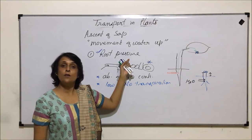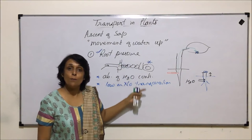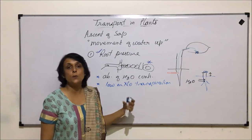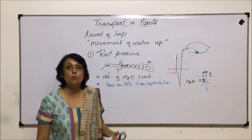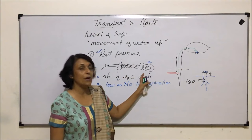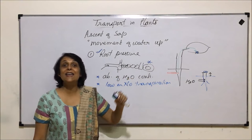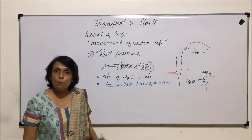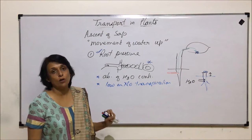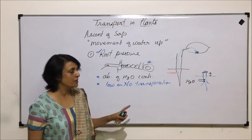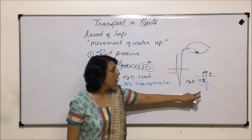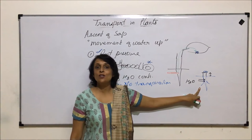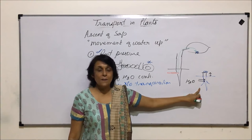When we are talking of tall plants which are 20 feet, 25 feet or even more tall, root pressure is not enough to pump water upwards. But it does help in small herbaceous plants.